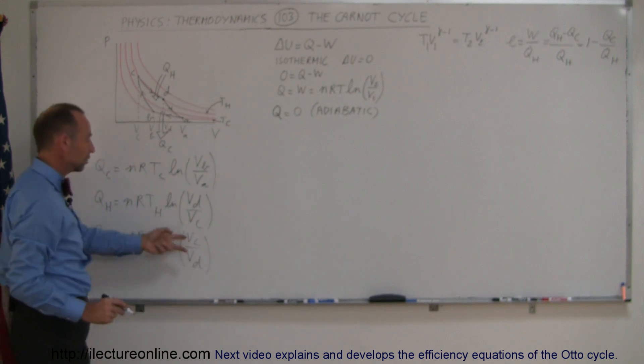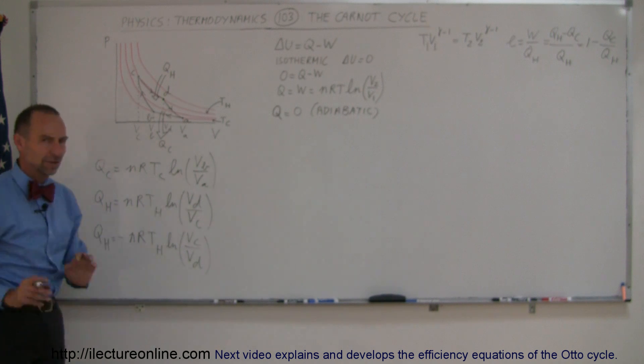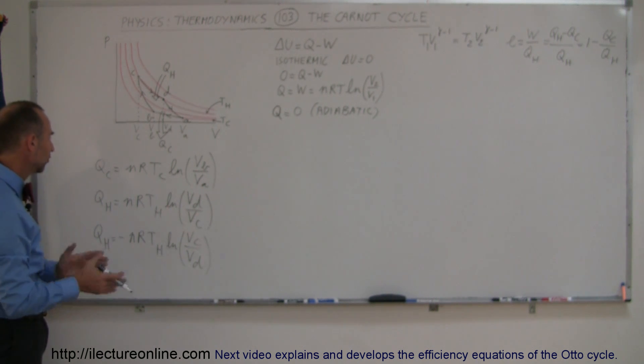Remember, when you interchange those two variables, that becomes negative, and that's then negated by the negative over here. And there's a reason why we did that, because the next step, we're going to divide Q_cold by Q_H to get that right there.